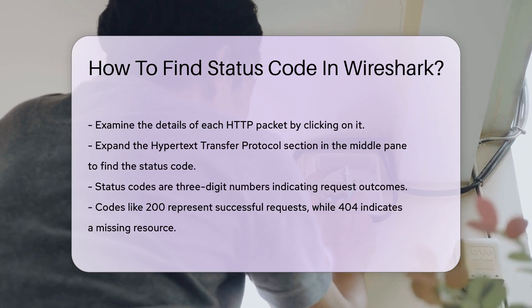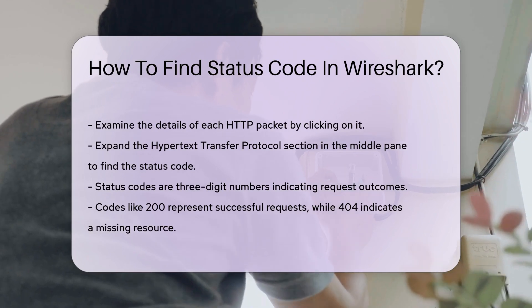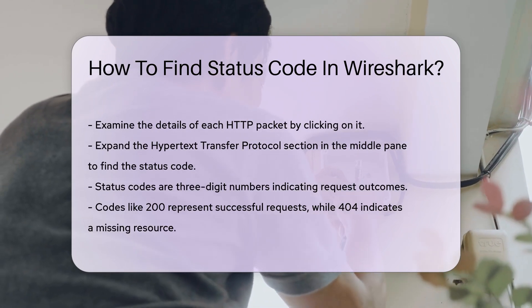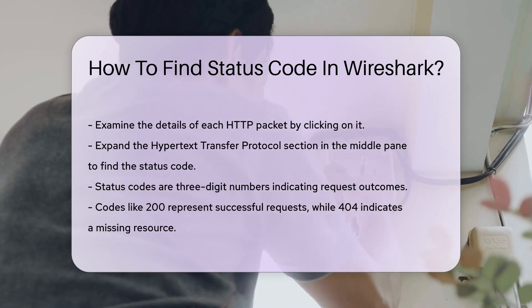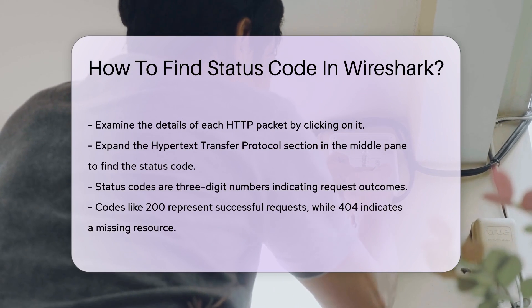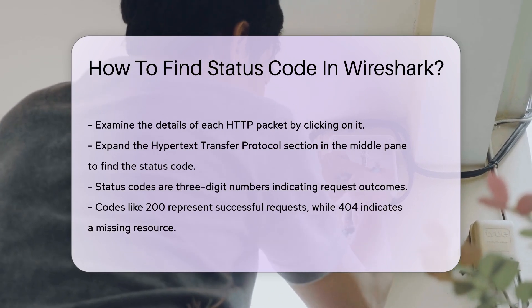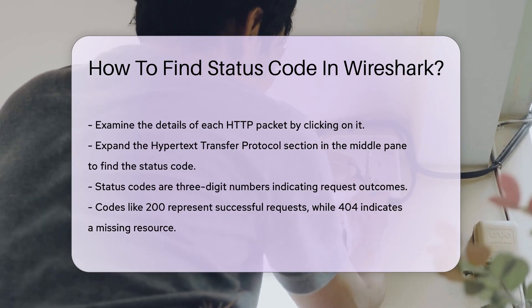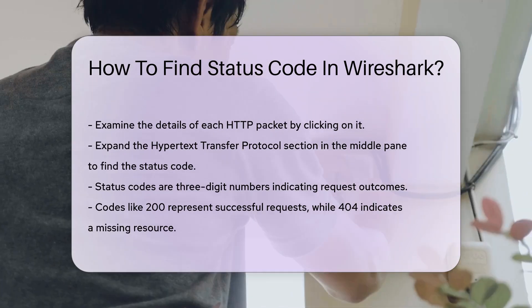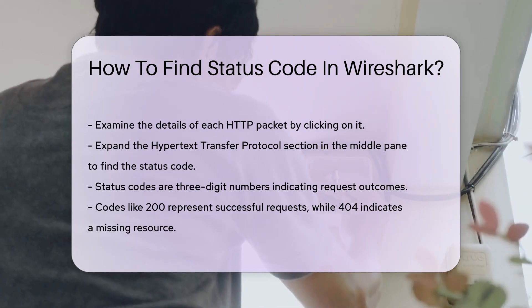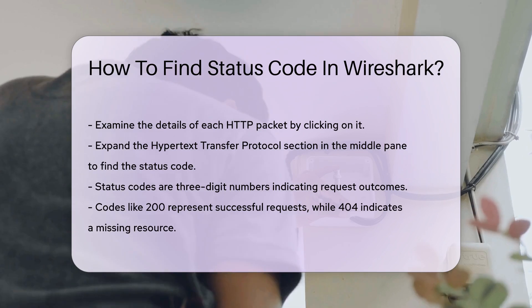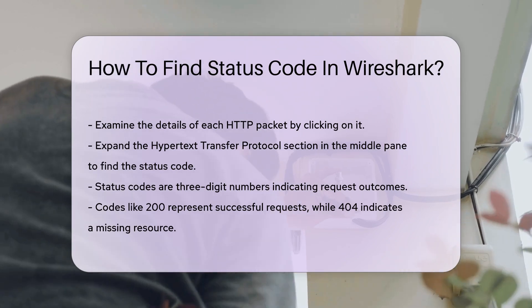The status code is a three-digit number that signifies the outcome of the request made to the server. Codes like 200 indicate success, while 404 signals that the requested resource was not found.